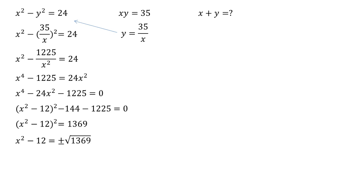So x squared minus 12 must equal plus or minus the square root of 1369 which is plus or minus 37. So x squared equals 12 plus or minus 37 which gives us minus 25 or 49.